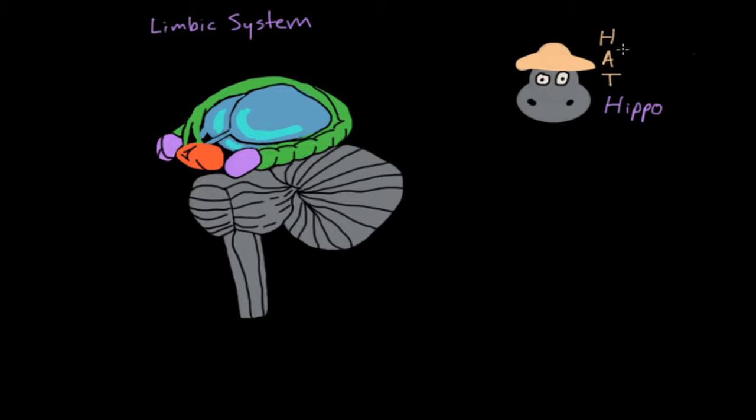So hat stands for hypothalamus, A for amygdala, T for thalamus, and hippo, short for hippocampus. And these happen to be the four structures that I'd like to talk about.